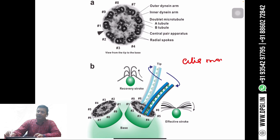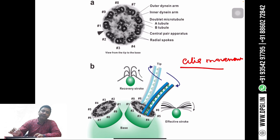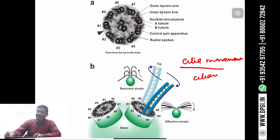In Kartagener syndrome, this axonemal dynein is affected. When the axonemal dynein is affected, it leads to ciliary immobility in the cells or in the body.